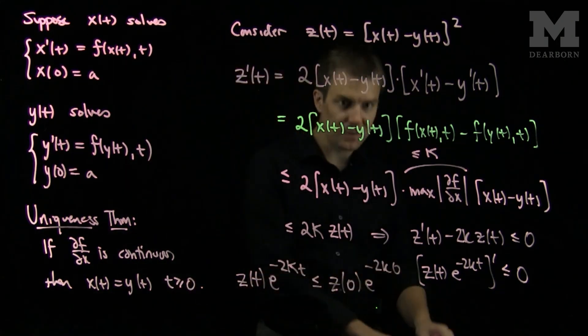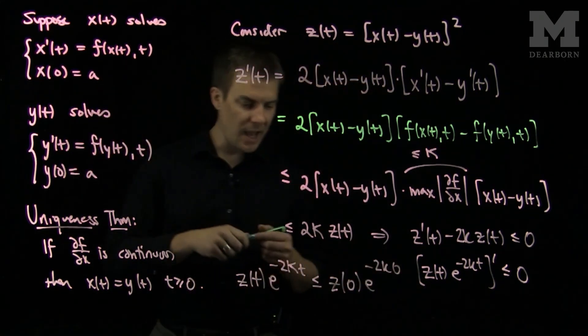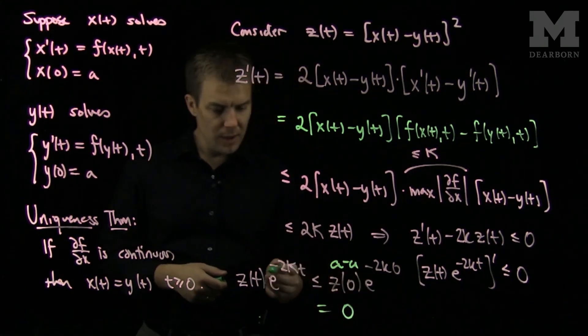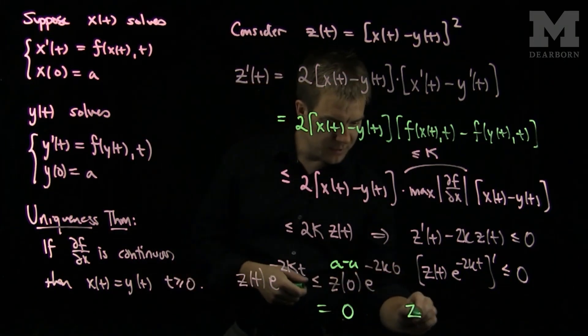But, we know that z of 0 is equal to 0 since they are both equal to a. So, this is a minus a, so this is equal to 0. So, that says that z of t is less than or equal to 0.